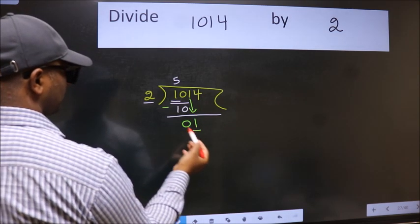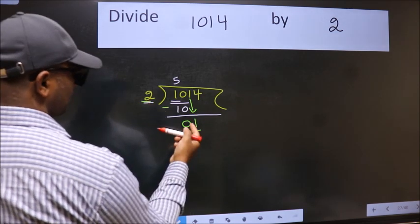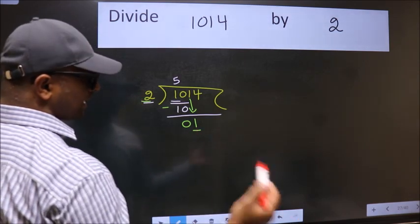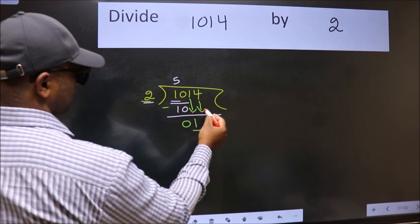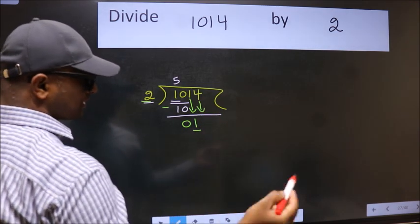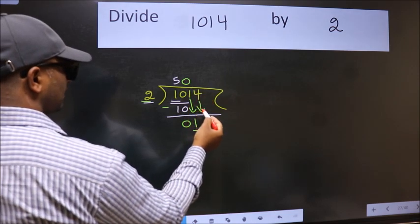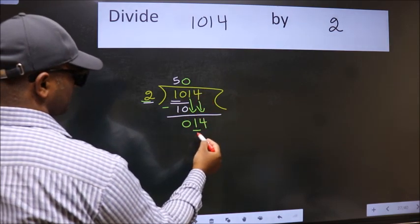Now here we have 1 and here 2. 1 is smaller than 2. So we should bring down the second number. And the rule to bring down the second number is: put 0 here. Then only we can bring this number down. So 14.